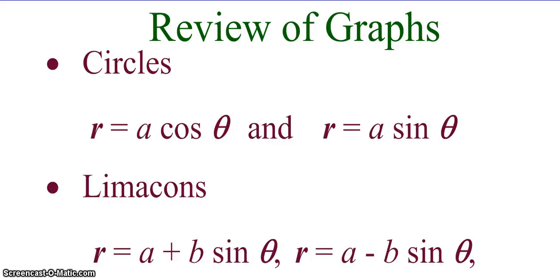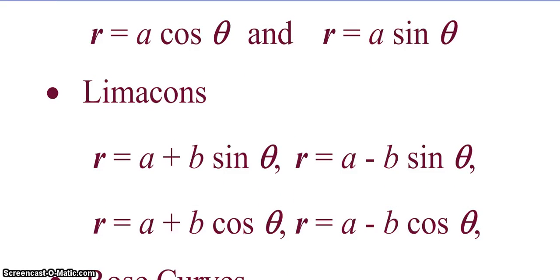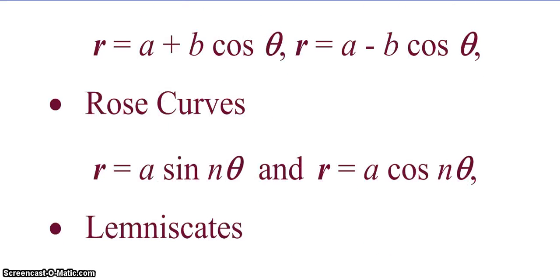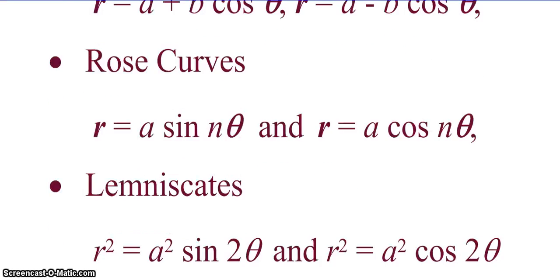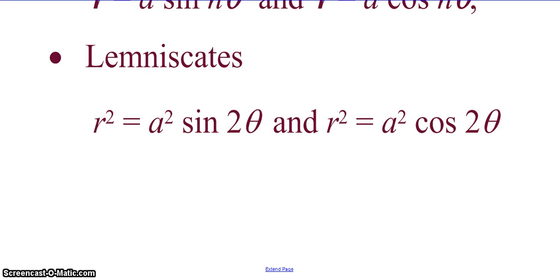So, a review of our graphs. Circles, I didn't specifically point these out, except for we did cover them at the beginning, or we saw some examples at the beginning, and I told you it was going to be a circle. So, if we have r equals a cosine theta or r equals a sine theta, those are going to be circles. Limacons, we just talked about. Rose curves, we just talked about. And lemniscates, we just talked about. So, those are our special polar curves.